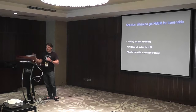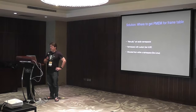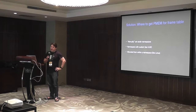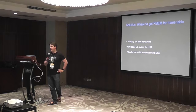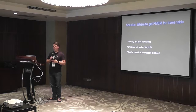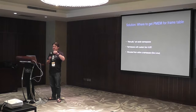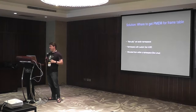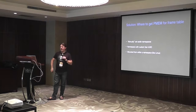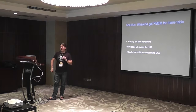Xen needs a place to store its PMEM frame table. One option is to have the user manually set aside a namespace for the frame table. A better idea would be to create a custom type UUID for Xen, so when you make a namespace you designate it for Xen's use, and when DOM0 boots it finds the namespace with the Xen frame table type and gives it to Xen automatically. Another option is to modify the Linux driver so that — just as Linux sets aside space inside the namespace for its own frame table — it can be configured to set aside space within the namespace for Xen's tables as well. These options can be implemented progressively to make things better.